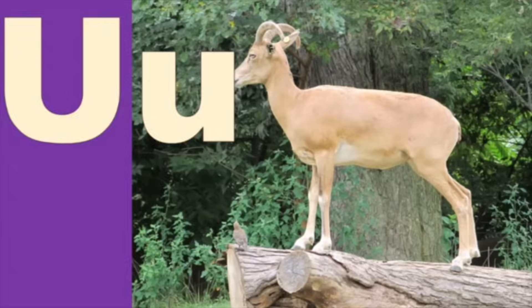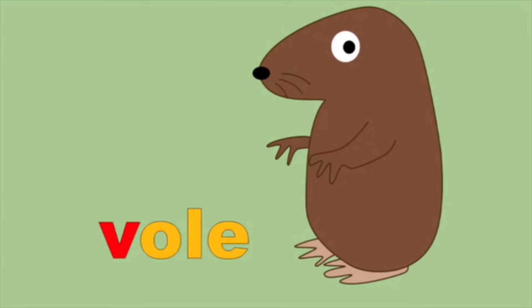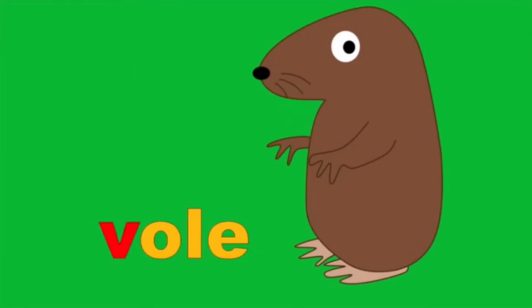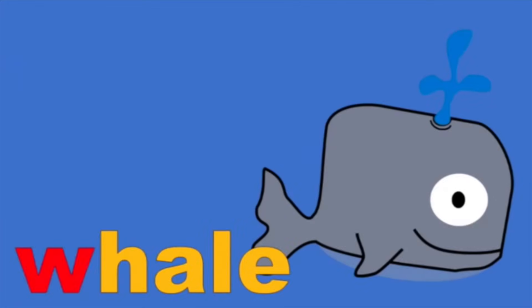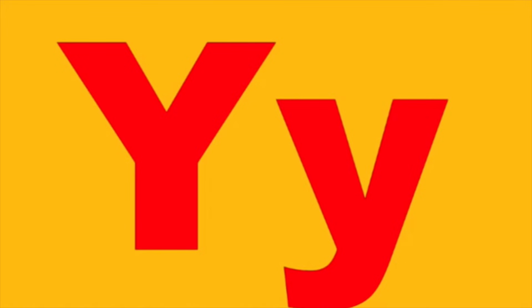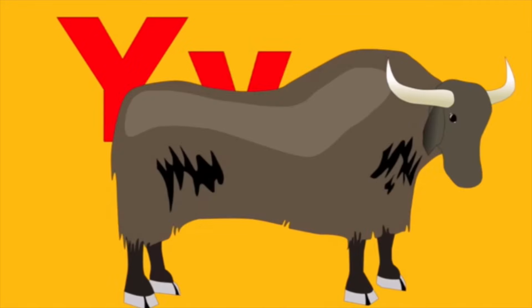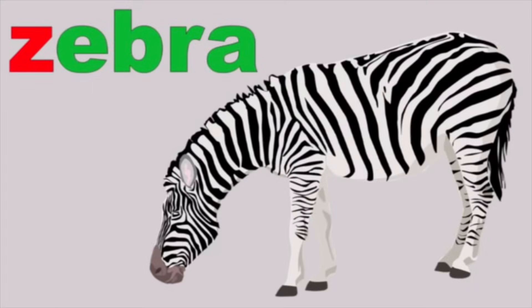U for uriel, u. V for vole, v. W for whale, w. X for x-ray fish, s. Y for yak, y. Z for zebra, z.